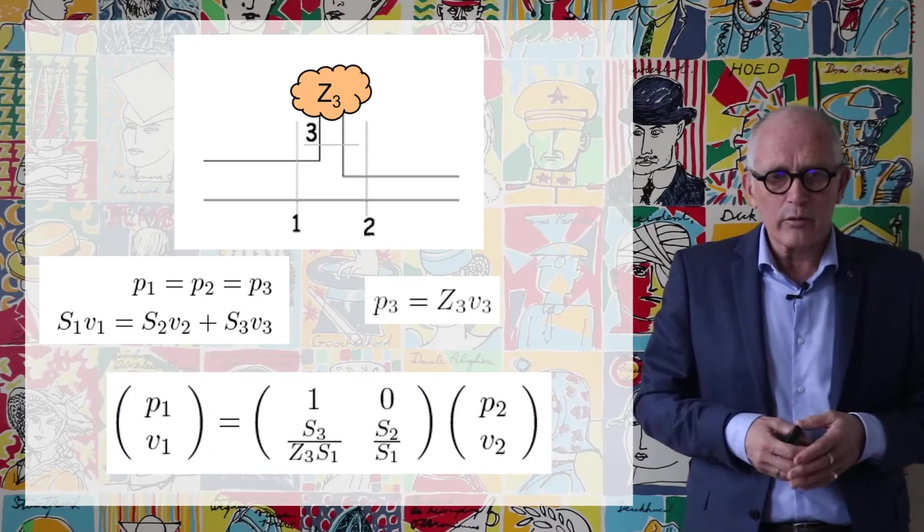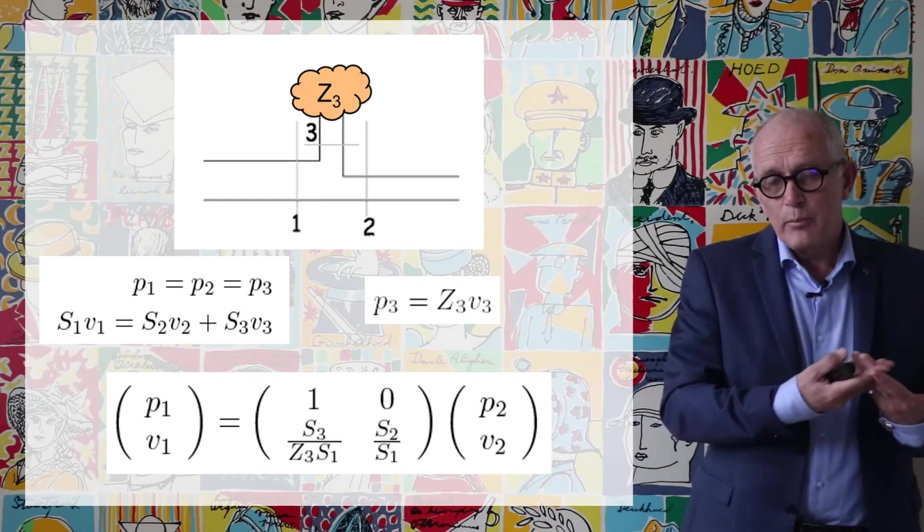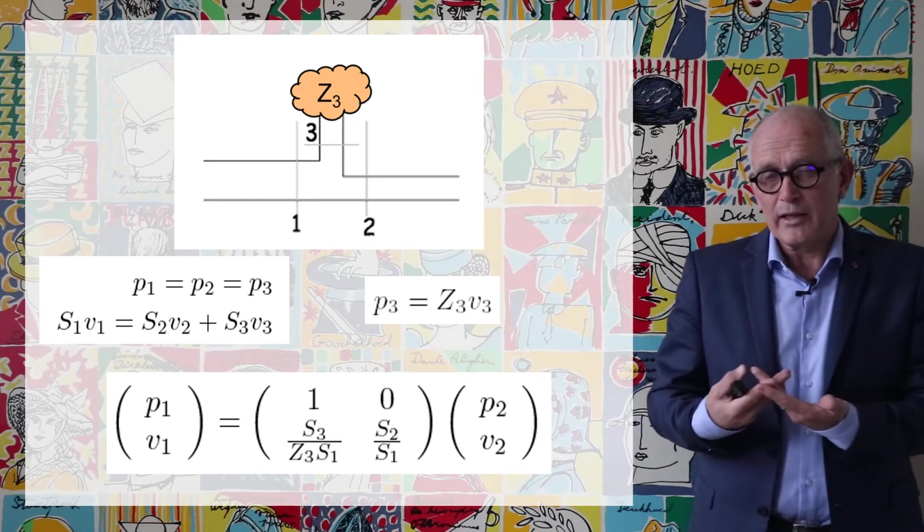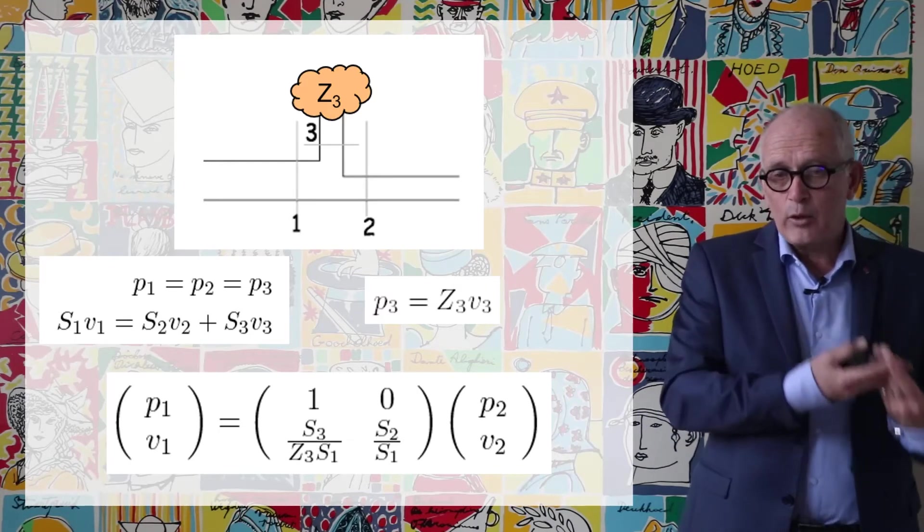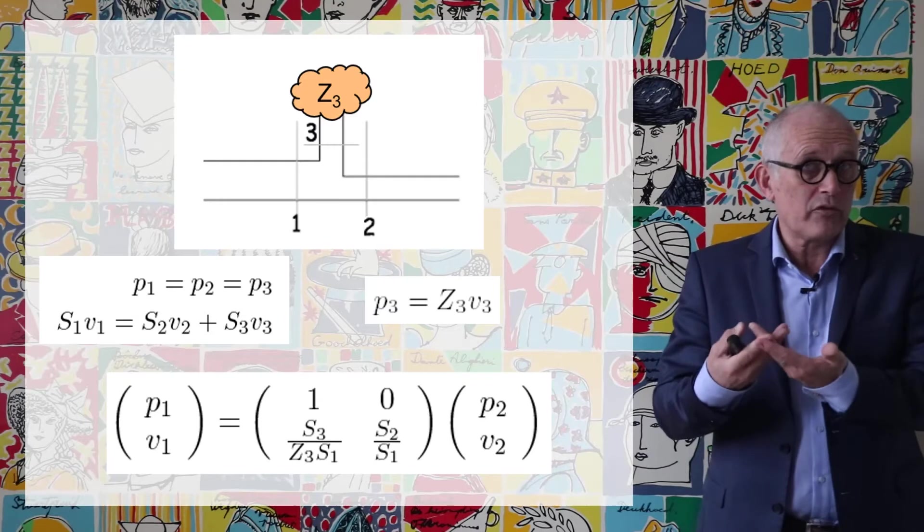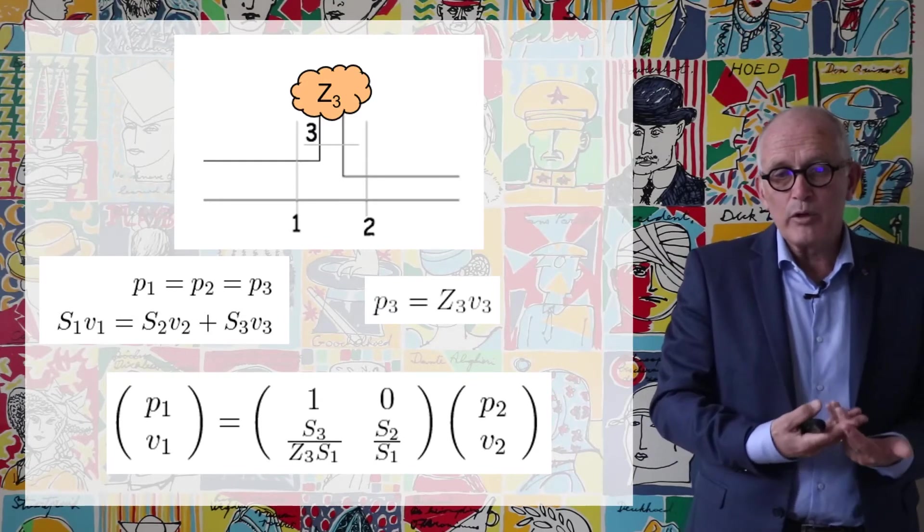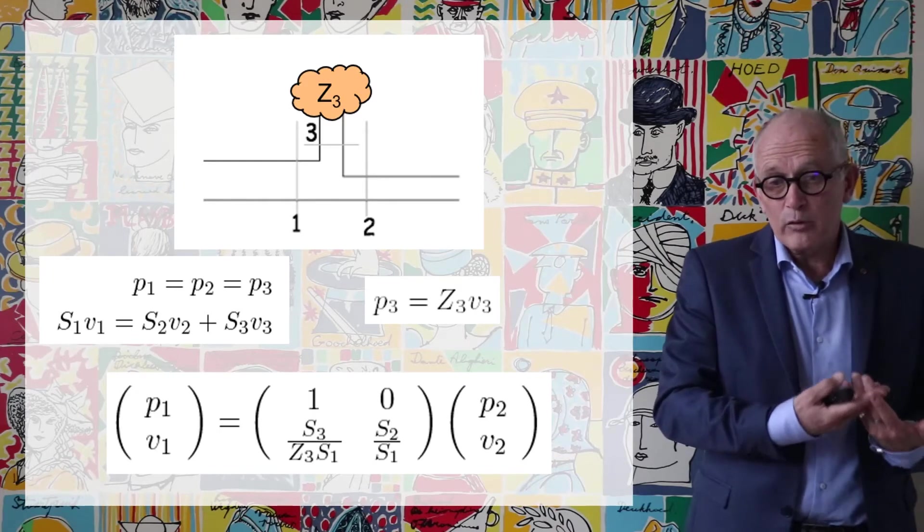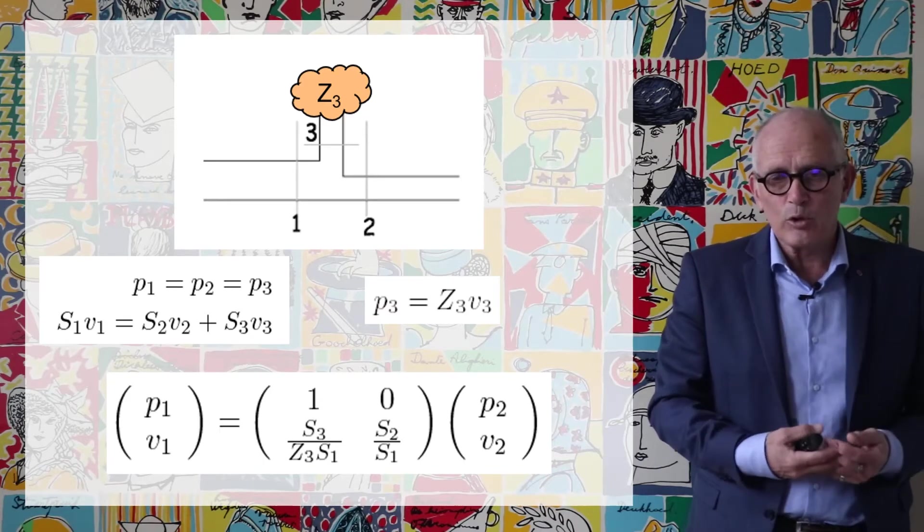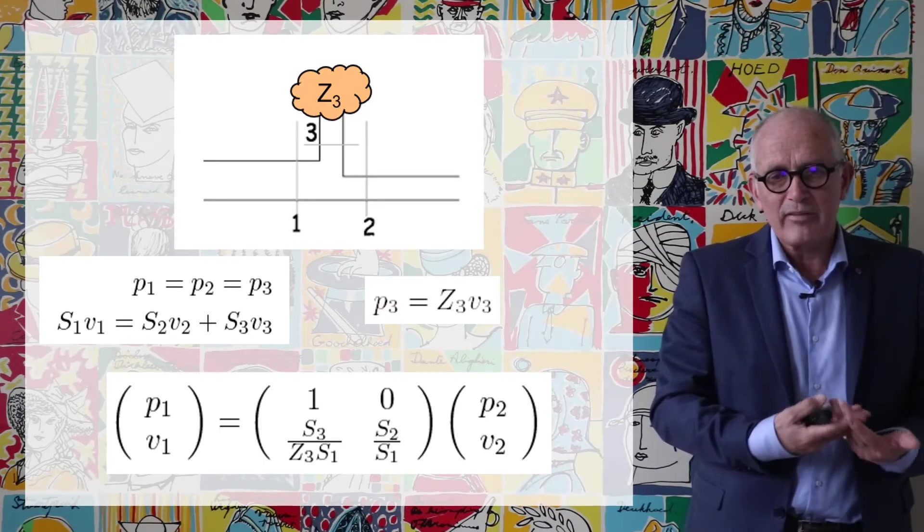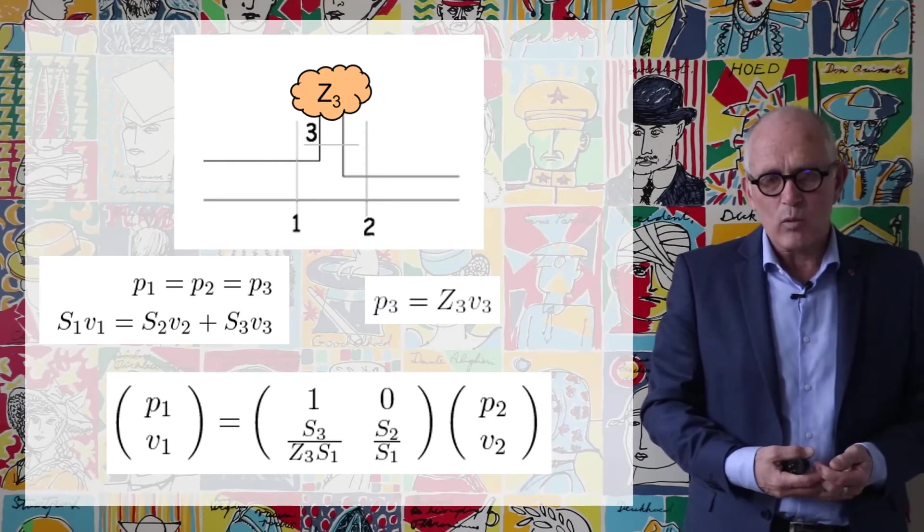If I put all that together it's quite easy to see that I obtain a matrix relationship between cross-section 1 and cross-section 2 which is on the first line 1, 0 and on the second line I have the cross-section change S2 over S1 but I also have a coupling between velocity 1 depends both on the pressure P2 and on velocity V2 and the other coefficient is S3 divided by Z3 times S1.